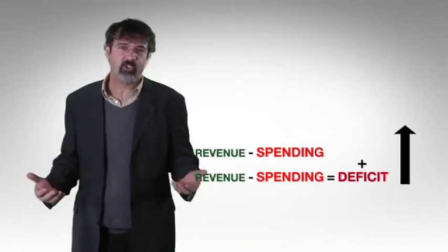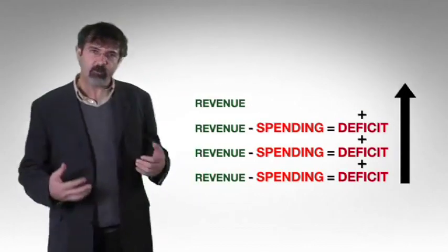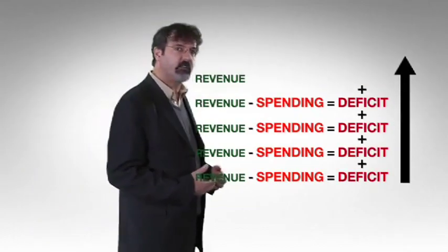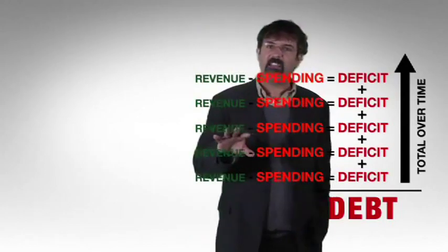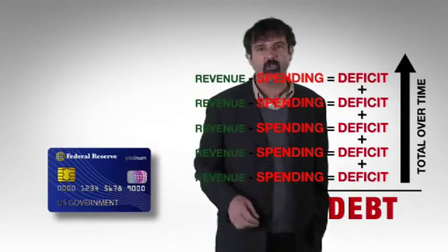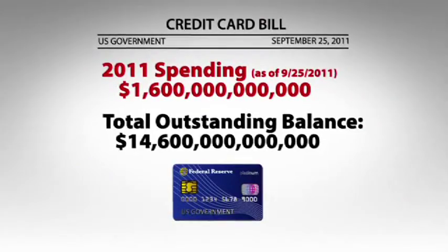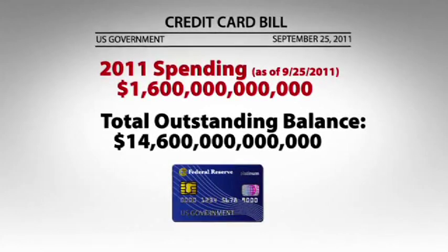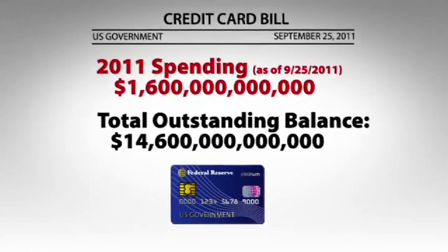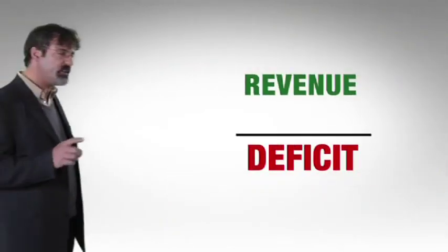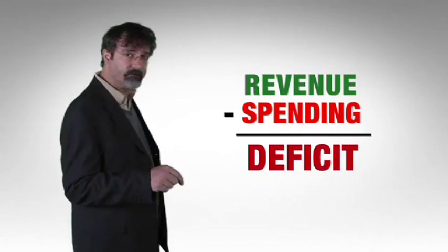People say that the government has a debt problem, but debt is in effect — the cause is deficits. Every time the government runs a deficit, the debt increases. If the debt is like the outstanding balance on a government's credit card, the deficit is the extra amount the government charges on its card each year. Debt is caused by deficits, but deficits are caused by the difference between tax revenue and spending.